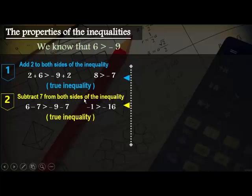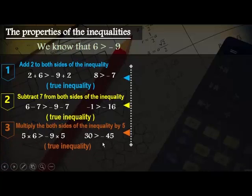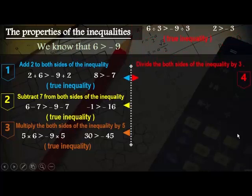Number 2: if we subtract 7 from both sides, then 6 minus 7 is greater than negative 9 minus 7, giving negative 1 is greater than negative 16 — the inequality is true. Number 3: multiply both sides by 5. 5 times 6 is greater than negative 9 times 5, giving 30 is greater than negative 45 — the inequality is true.